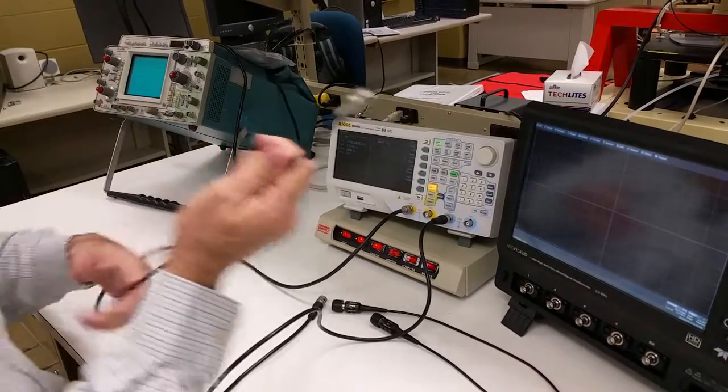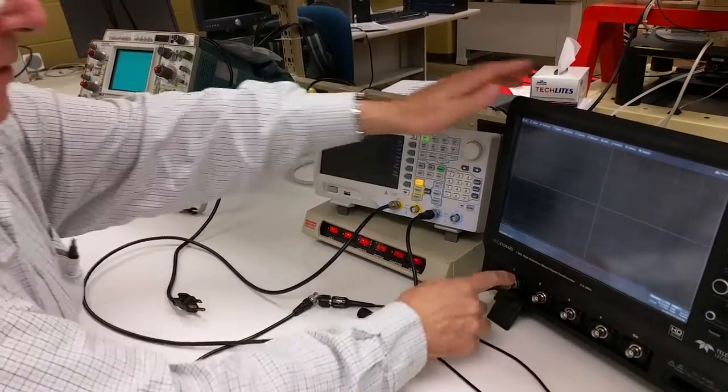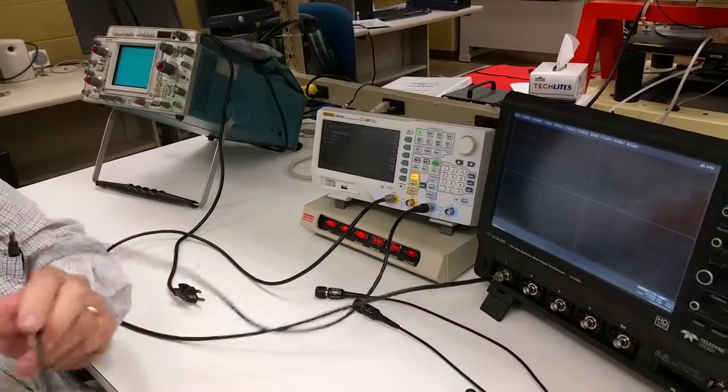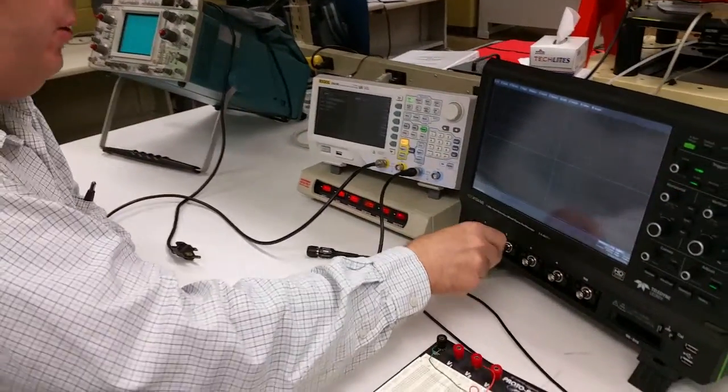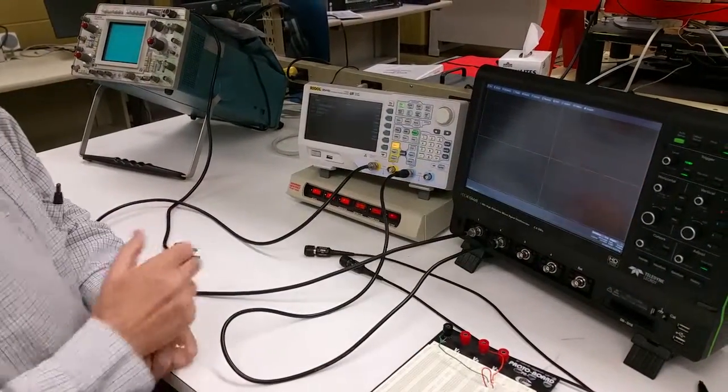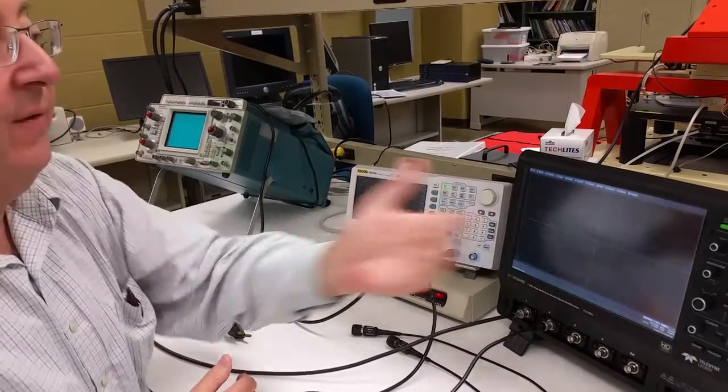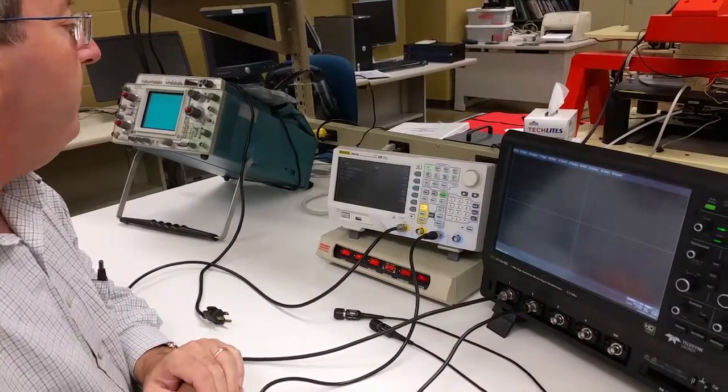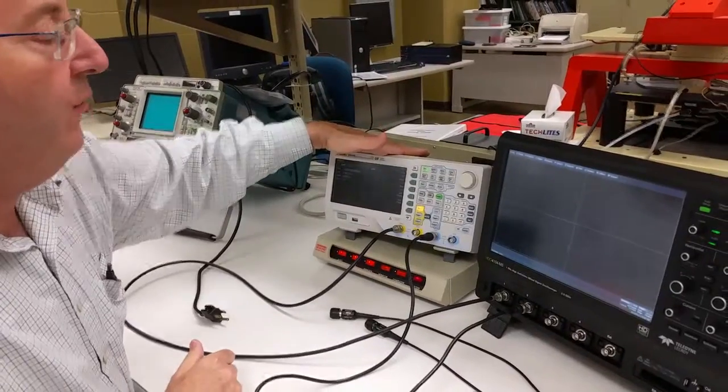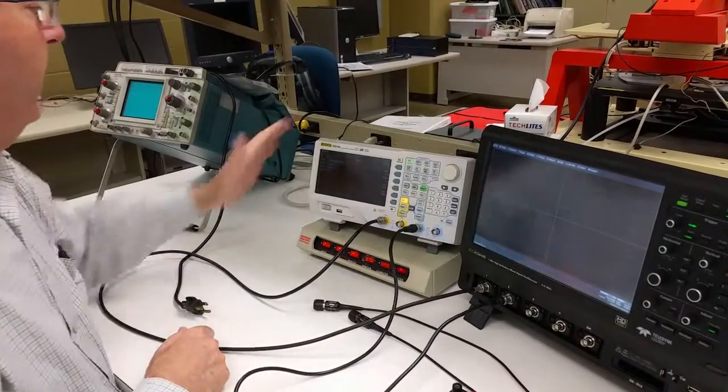Now I'm going to take the output of channel 1 and I'm going to plug it into the input of the oscilloscope of channel 1, and I'm going to take the output of channel 2 and plug it into the input of channel 2. So far nothing is showing up on the screen because I don't have an output and I haven't selected any inputs. So this produces a waveform and this shows us the waveform. Let's get back to this.